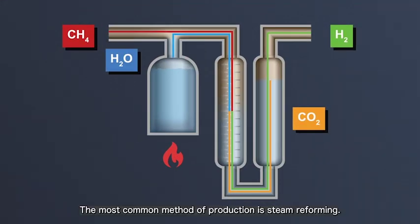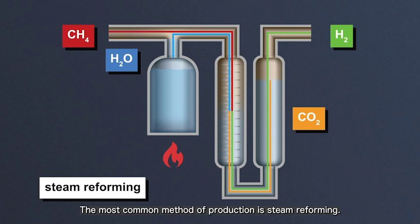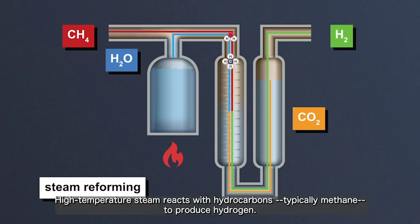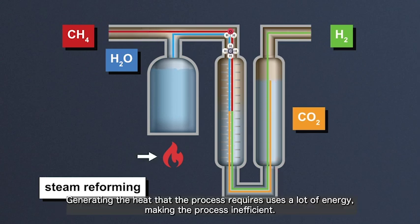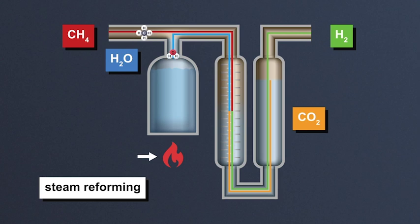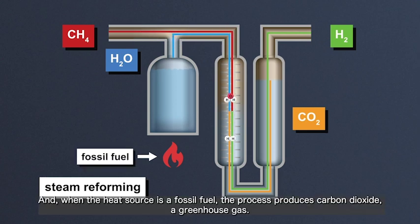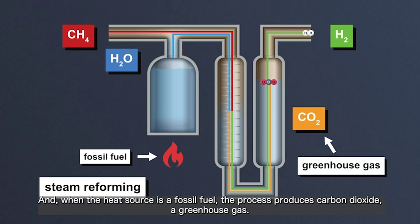The most common method of production is steam reforming. High-temperature steam reacts with hydrocarbons, typically methane, to produce hydrogen. Generating the heat that the process requires uses a lot of energy, making the process inefficient. And when the heat source is a fossil fuel, the process produces carbon dioxide, a greenhouse gas.